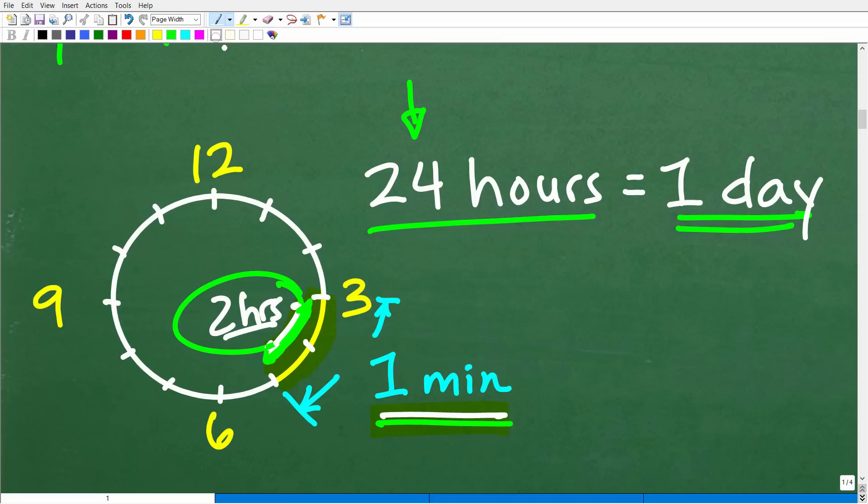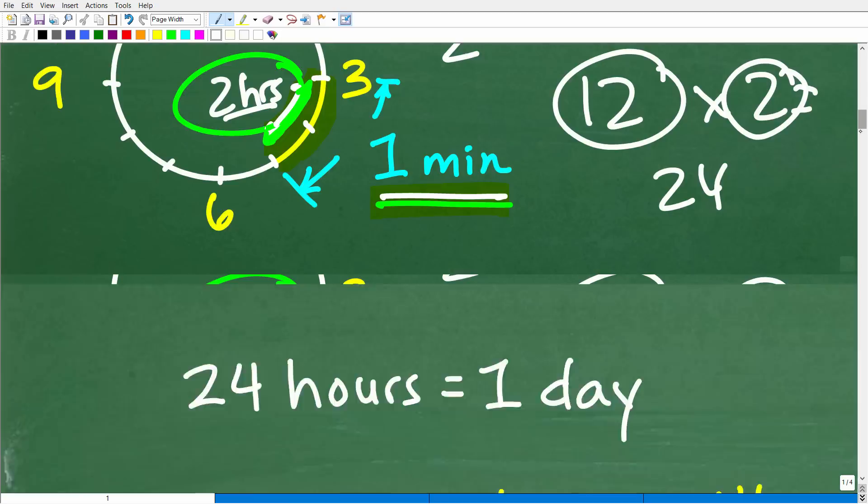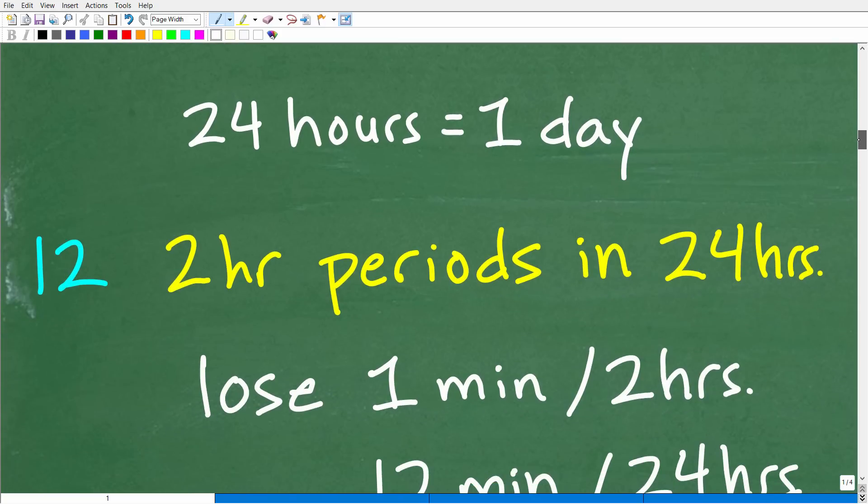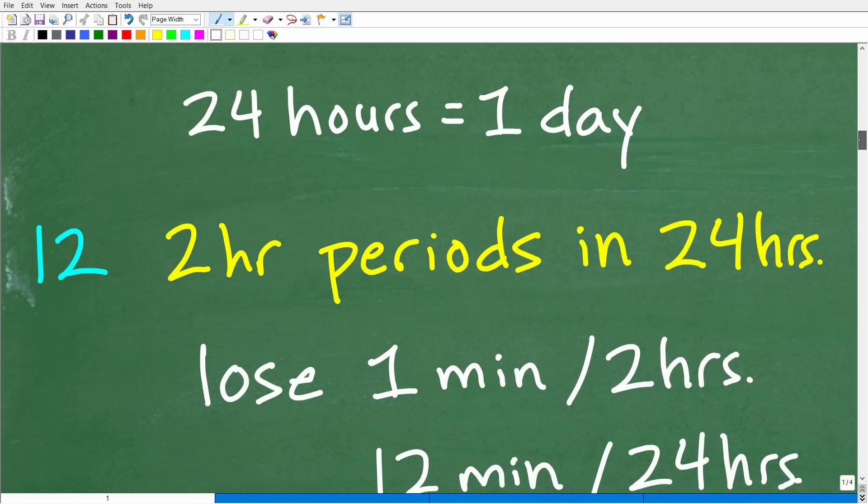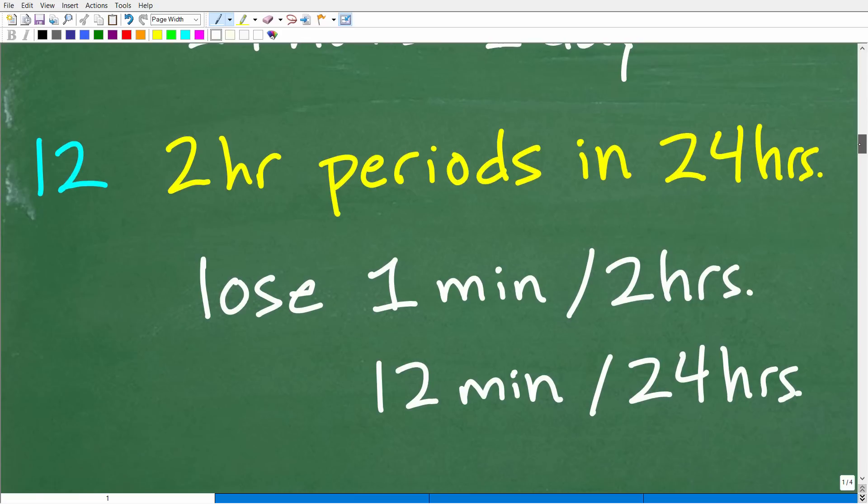So how many hours is in one day? Well, hopefully you all know that there's 24 hours in one day. Now, we have a two-hour period of time here where a clock loses one minute. So how many two-hour blocks of time do we have in a full day or a full 24 hours? Well, just take 24 and divide it by 2. So that is 12. There is 12 two-hour blocks in a 24-hour period.